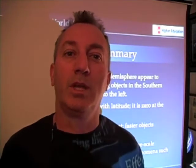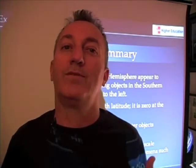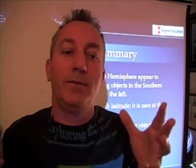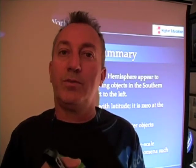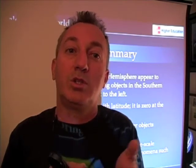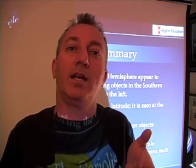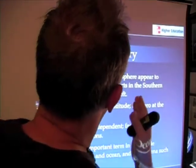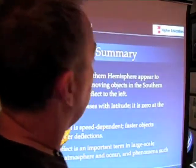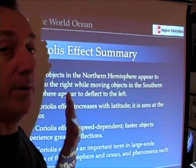Another way to think about it: if you're an object on the equator moving at 464 meters per second, as you move further north you're still carrying that 464 meters per second eastward velocity. But the earth beneath you is not moving that fast at higher latitudes. So as you head north, it looks like you're traveling to the east because the earth beneath you is traveling east more slowly than you were when you left the equator.